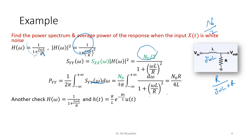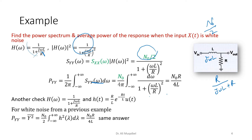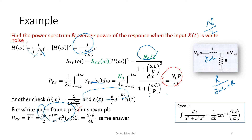To verify, we can use the time-domain relation. For white noise, the output power equals N₀/2 times the area under |h(t)|². Integrating h(t) in the time domain gives the same result: N₀R / (4L). This confirms that the power computed in the time domain equals the power in the frequency domain — this is Parseval's theorem.